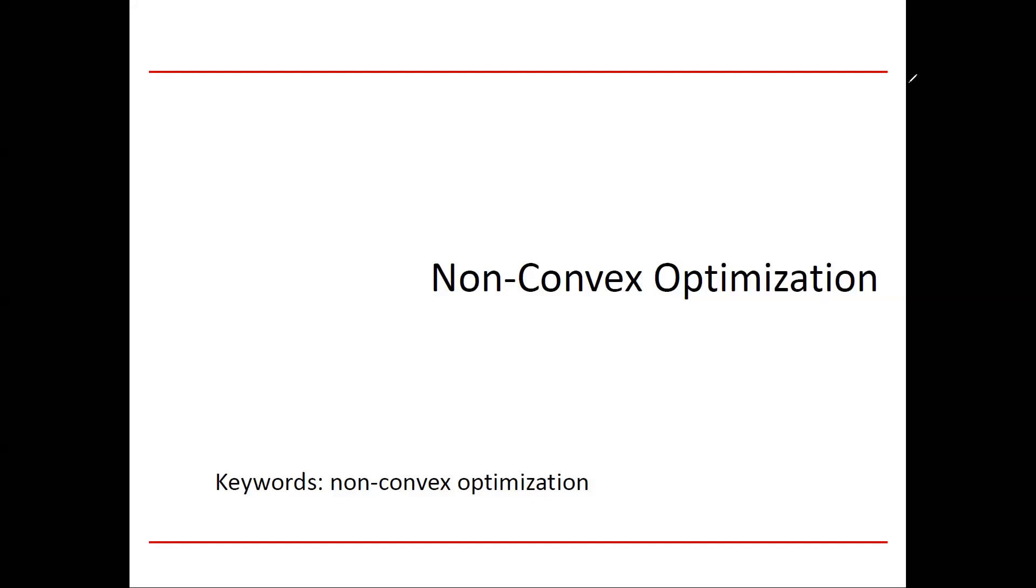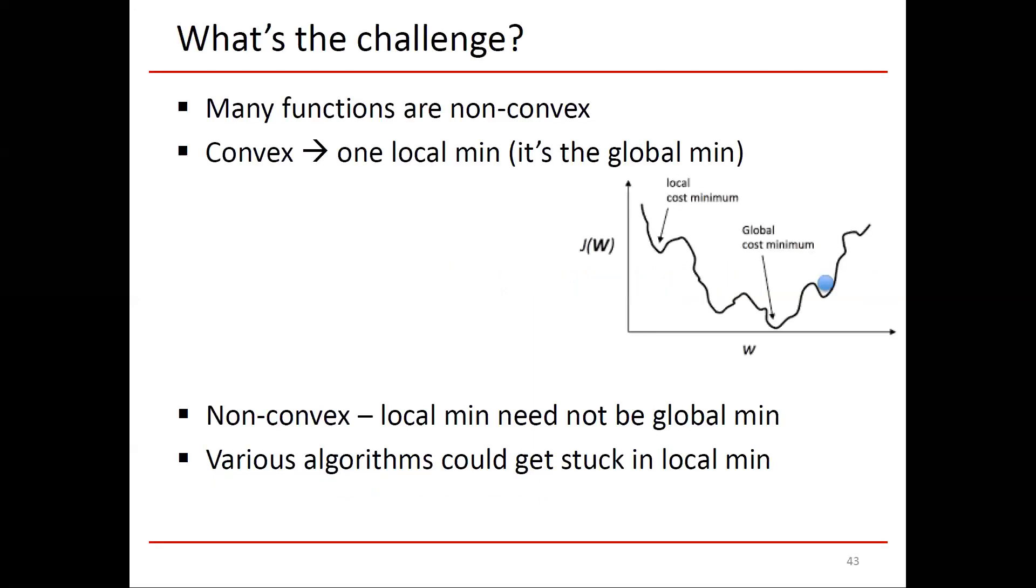When we were discussing convex optimization, we had a convex function optimizing within a convex set. With that type of constraint, there's a single global optimum. That makes things very convenient. What we're going to see now is that things are less convenient when the function is non-convex. Many functions are well approximated as convex, and if the function is convex, there's a single local minimum. But here we have an example where the horizontal axis is w, the vertical axis is j of w, and j of w is non-convex. It goes up and down, has a local minimum and a global minimum.